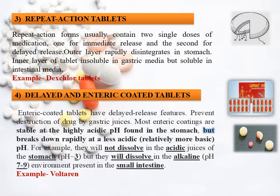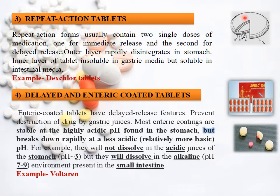Repeat action tablet: a single tablet shows two types of action — immediate release and delayed release — both in one tablet. The outer layer rapidly disintegrates in the stomach so its action is rapid. The inner layer is insoluble in gastric media but soluble in intestinal media, so its disintegration and release time is delayed. That's why repeat action tablets show two types of action: first immediate, second delayed.